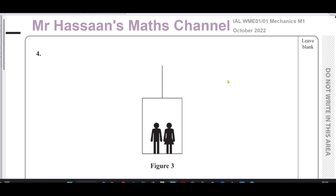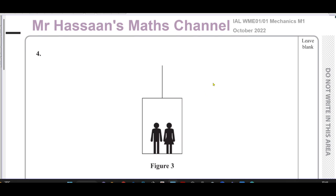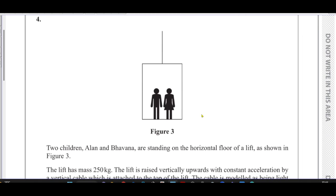Welcome back, this is Mr. Hasan's Maths channel, and I'm now answering question number four from the October 2022 international A-level NXL Mechanics M1 paper. This question is about some people in a lift — two children, Alan and Bavana.